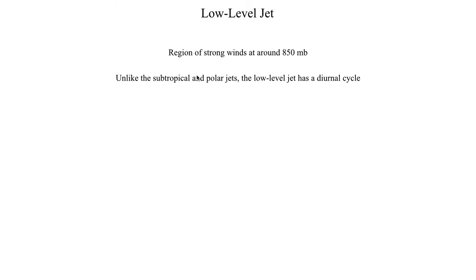The low-level jet is different in several respects. One of those differences is that the low-level jet has a diurnal cycle — it's typically weaker during the daytime and strongest during the nighttime. Unlike the subtropical jet, which stays at pretty much the same intensity regardless of whether it's daytime or nighttime. We'll talk about why that's the case in just a few minutes.